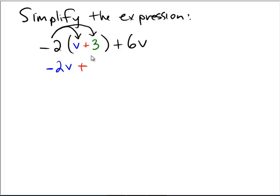Then, in the second place, we have a negative 2 multiplied by 3, which is the quantity negative 6.